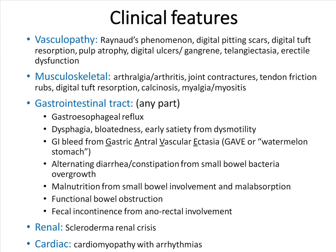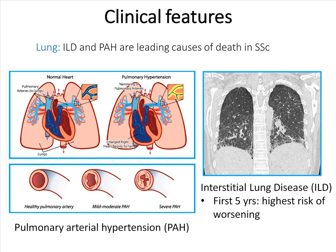Other manifestations include cardiac involvement, manifested by cardiomyopathy and arrhythmias. Lung is an important complication of systemic sclerosis, typified by interstitial lung disease and pulmonary arterial hypertension, which are leading causes of death. ILD in particular has the highest risk of worsening in the first five years of disease onset.